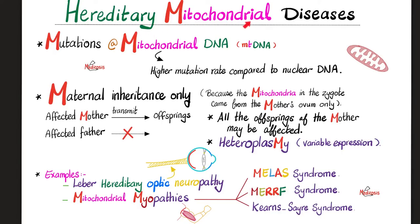Now, hereditary mitochondrial diseases. The problem is a mutation in the mitochondrial DNA. Mitochondrial DNA has a higher mutation rate compared to nuclear DNA, because the proofreading mechanisms are more robust in nuclear DNA than in mitochondrial DNA, making mitochondrial DNA more vulnerable to mutations. Since mitochondrial DNA comes only from the mother, an affected mother can pass this disease to all her offspring — males and females. But if daddy is affected, he cannot give a mitochondrial disease to his children, because he leaves his tail outside.